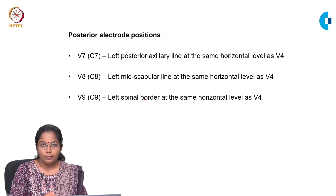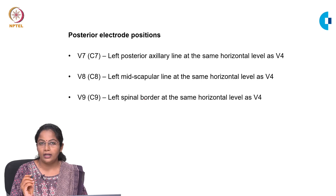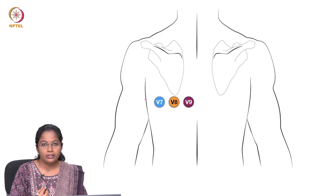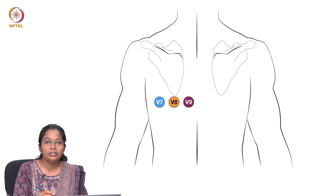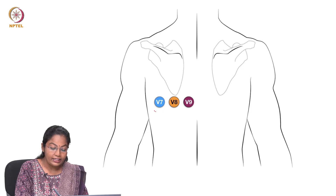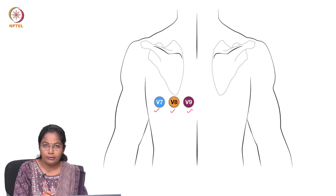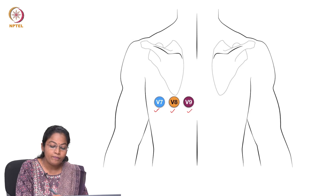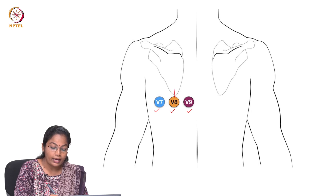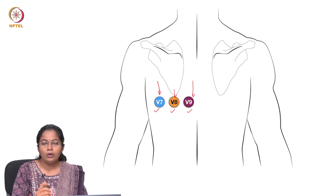Another special situation is posterior wall myocardial infarction, where leads have to be placed at the back of the chest. Leads V7, V8 and V9 are placed in the same fifth intercostal space corresponding to V4. V7 is placed in the posterior axillary line, V8 is placed at the tip of the scapula, and V9 is placed in the left paraspinal region.